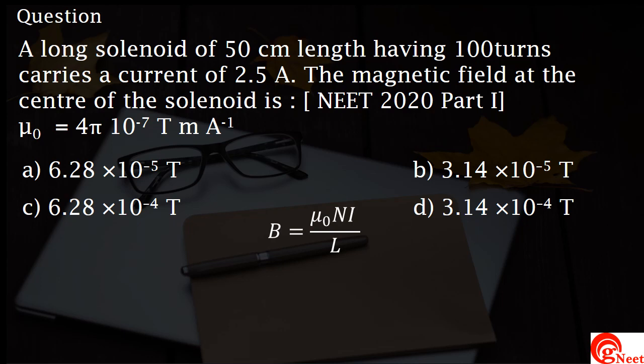Substituting the given values, we get B = 4π × 10⁻⁷ × 100 × 2.5 divided by 0.5.